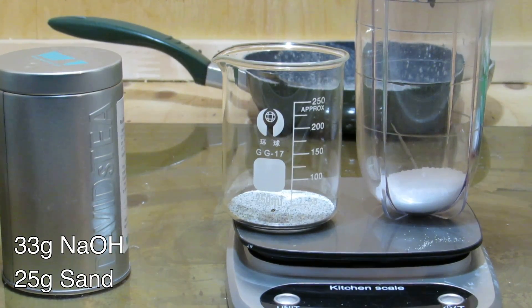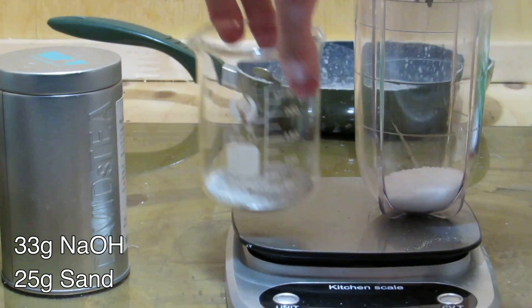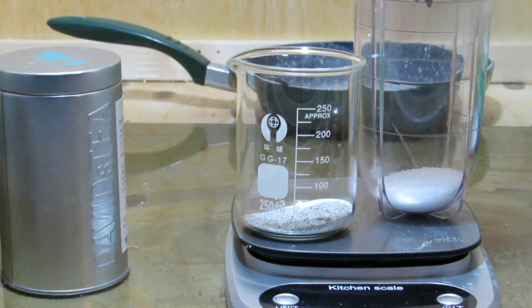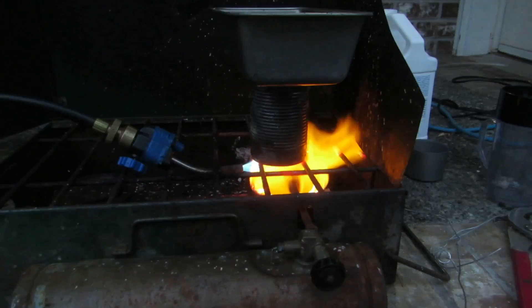We could first weigh out 33 grams of sodium hydroxide and 25 grams of sand and grind them together in a blender. The powder was transferred to a steel can and heated on a stove until everything was molten. The sodium hydroxide reacts with the silicon dioxide to form sodium silicate and water.